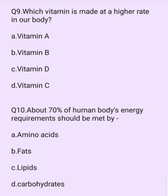Which vitamin is made at a higher rate in our body? Options are: vitamin A, vitamin B, vitamin D, vitamin C. The answer is option C: vitamin D.